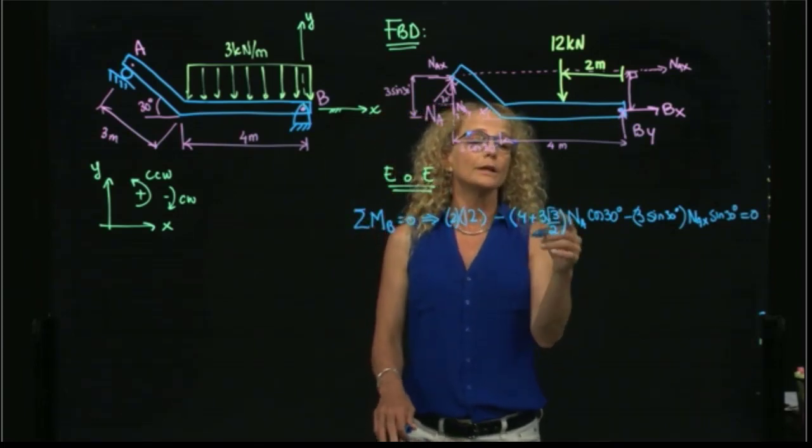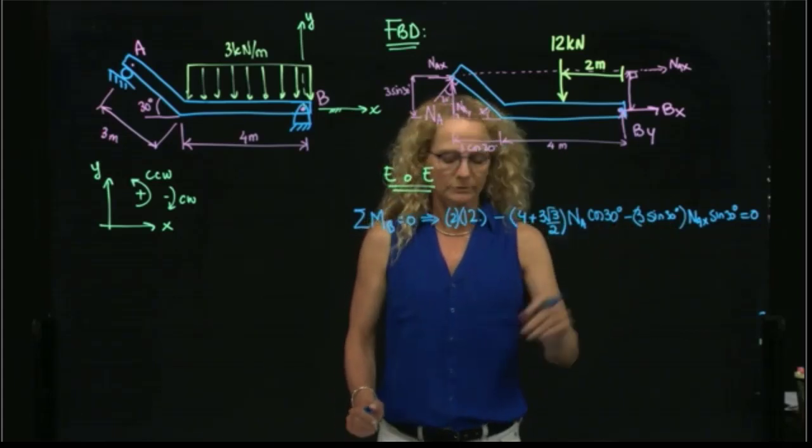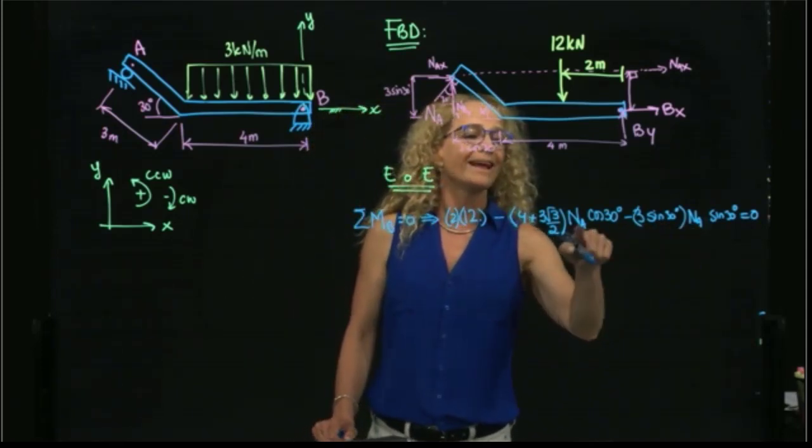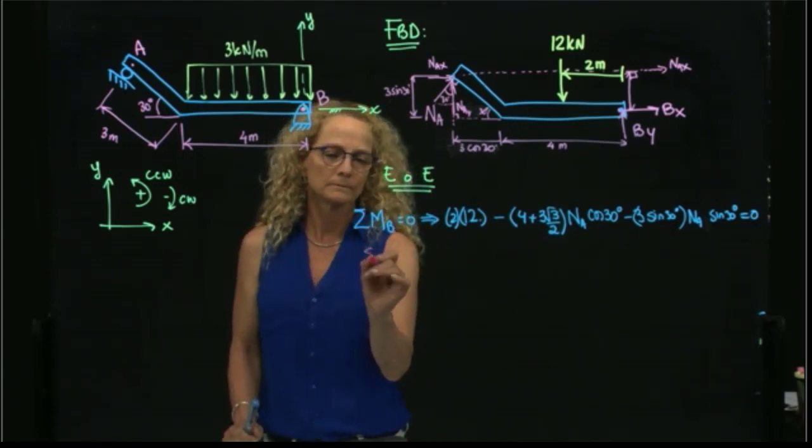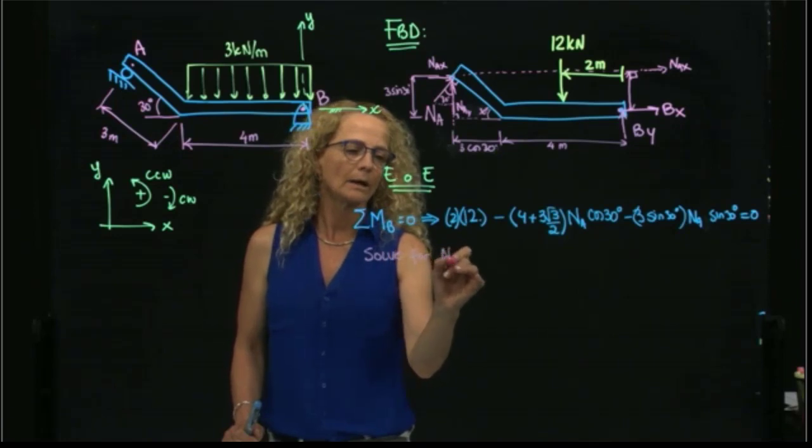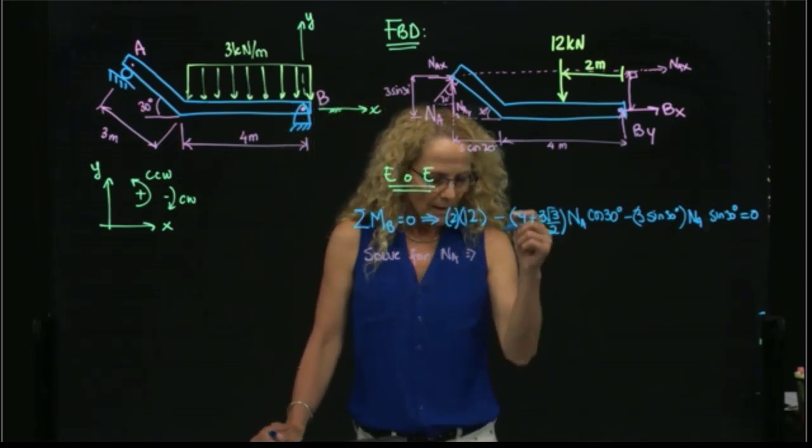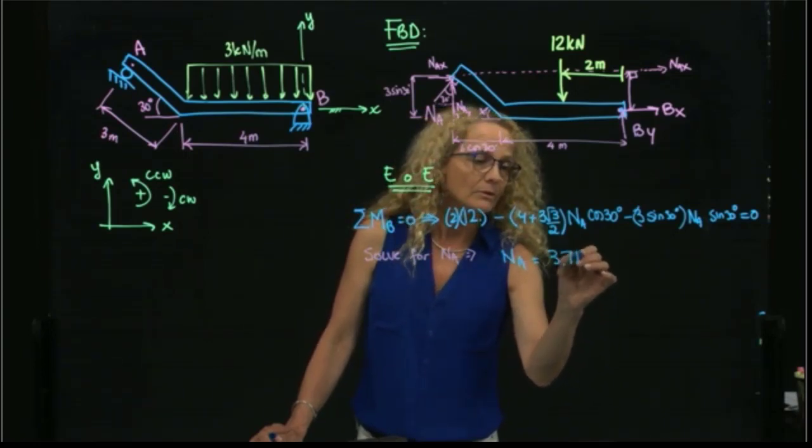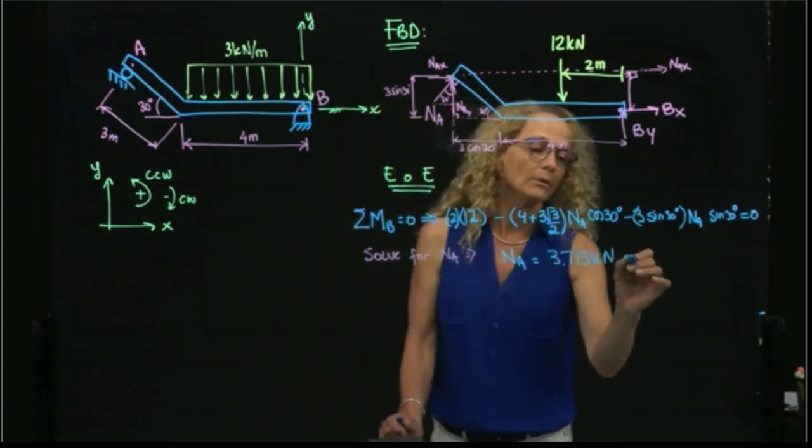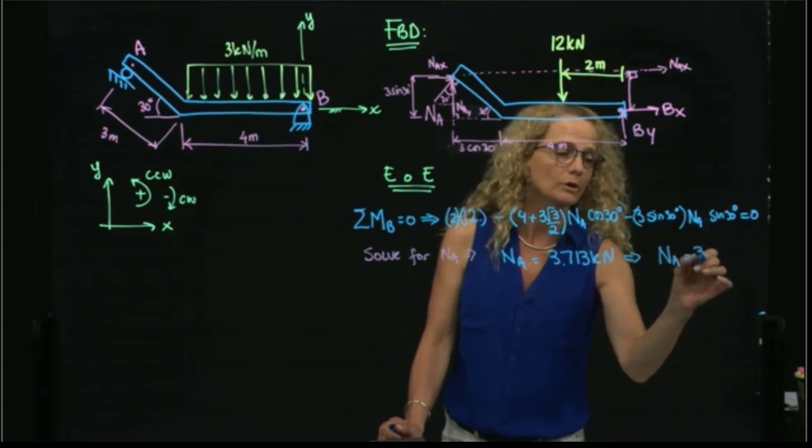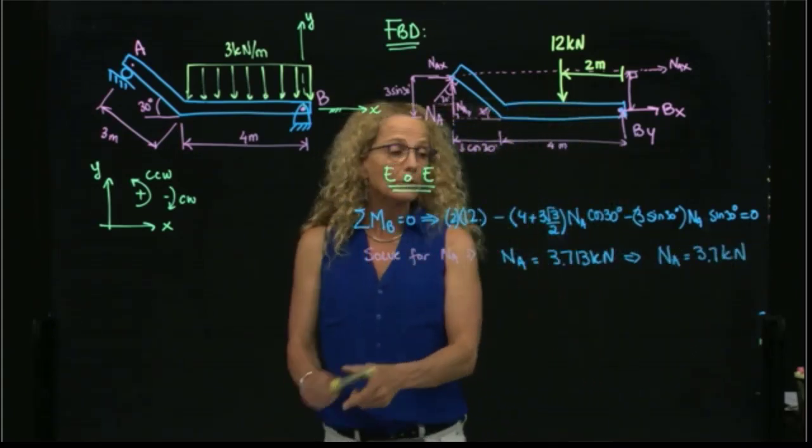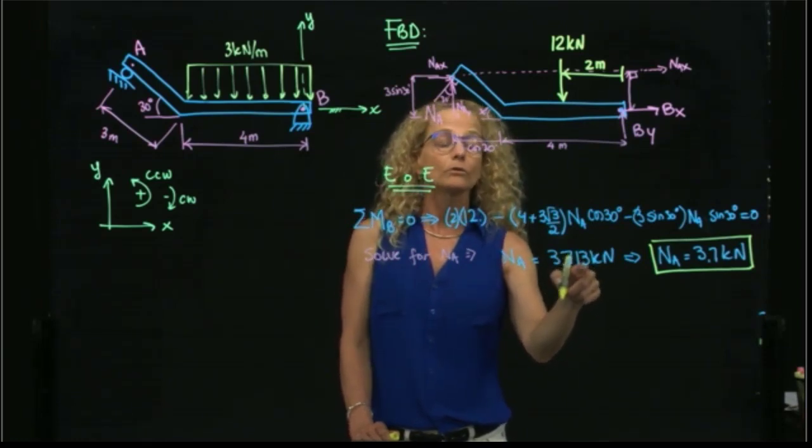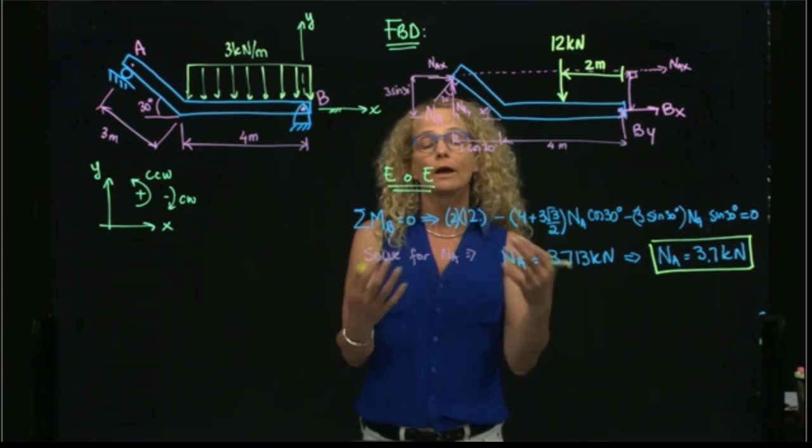So from here, as you see, the only unknown that I have is NA. Therefore, I can solve for NA, and I get that NA is equal to 3.713 kilonewtons. I can round this number and put that NA is equal to 3.7 kilonewtons. Even though I round the number to give my results, please keep at least 3 or 4 decimals for further calculations. Otherwise, you will have rounding errors.